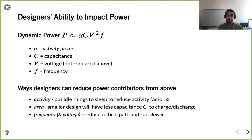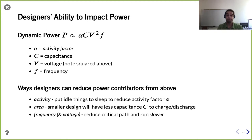Dynamic power has four terms. Alpha is the activity factor — how much things are toggling. In a circuit, what you're really doing is charging and discharging capacitances. How much power it takes depends on how much capacitance you're charging and discharging, the rate at which you're doing that (frequency), and the voltage — notice there's a V-squared relation. The activity factor alpha is how often you're doing it.